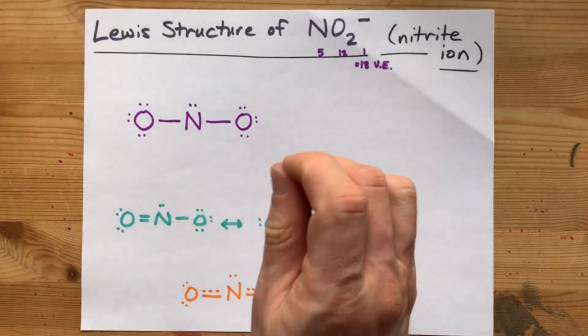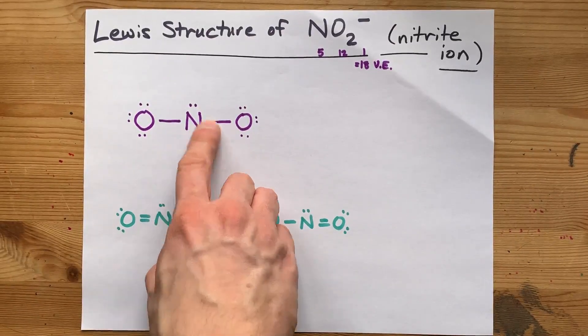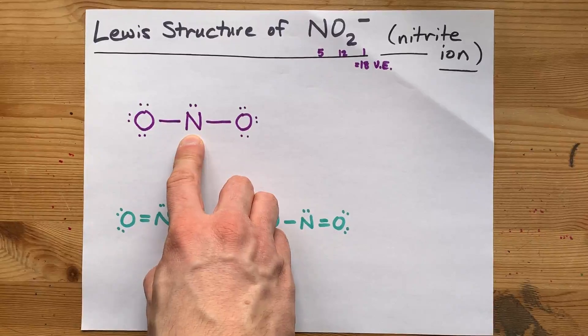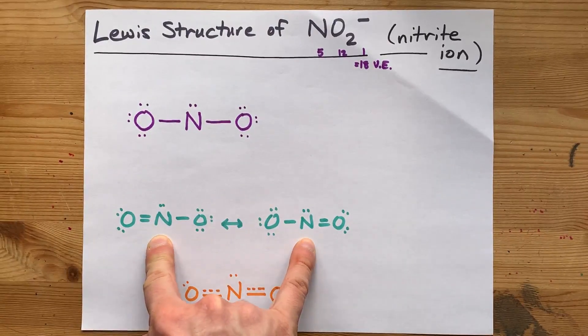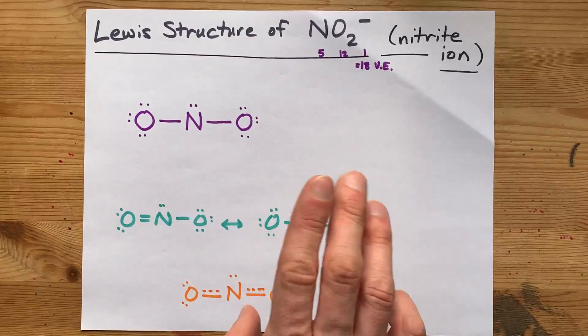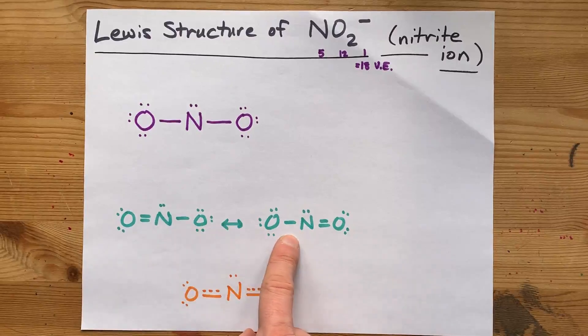But you came here for the Lewis structure. This one is not valid because nitrogen does not have a complete octet. But your job is to draw either this or this. Or, if your teacher has talked about resonance in class, you're probably supposed to draw both.